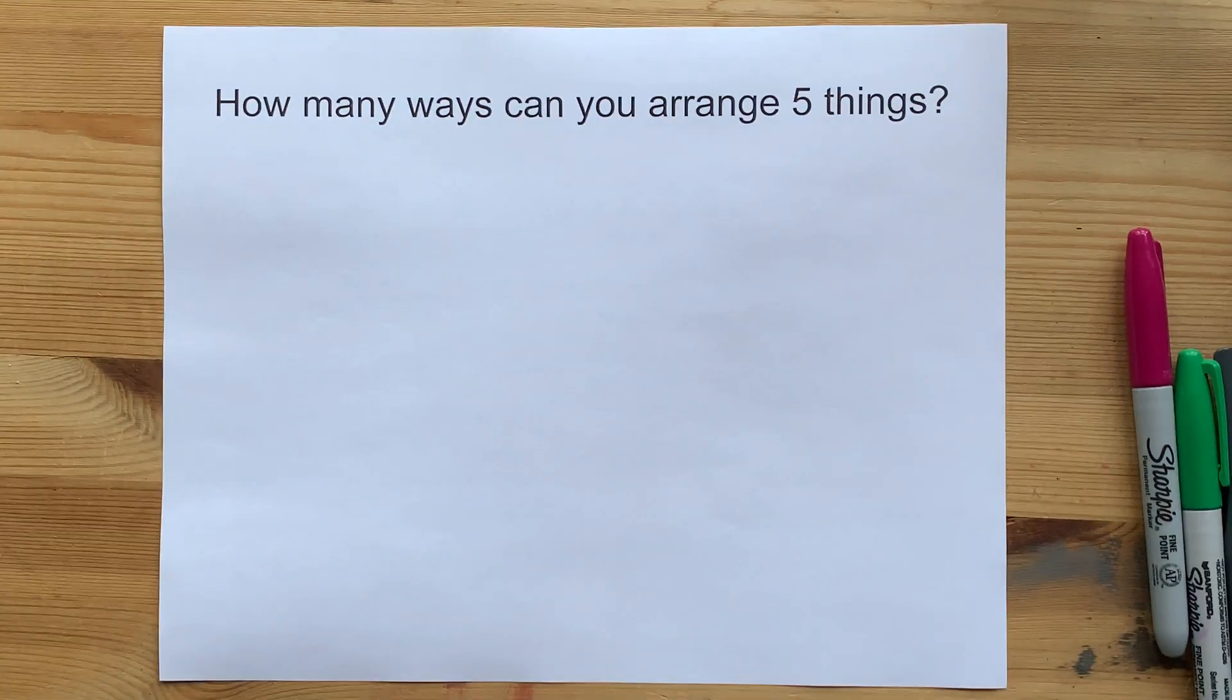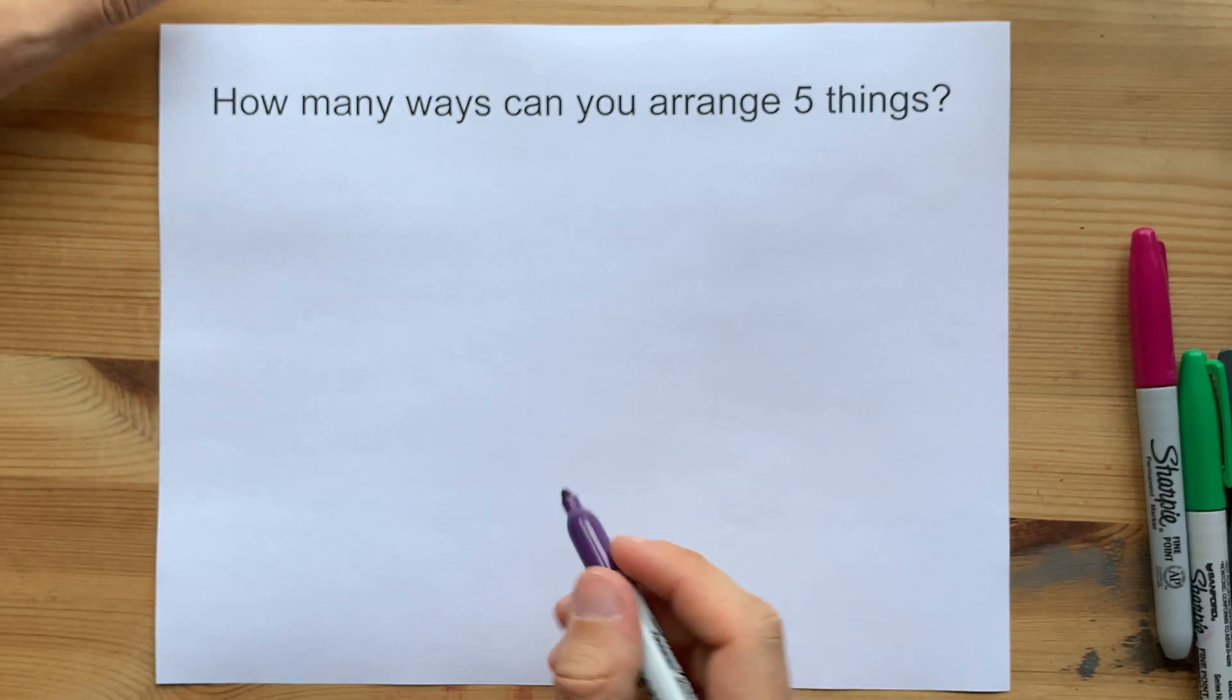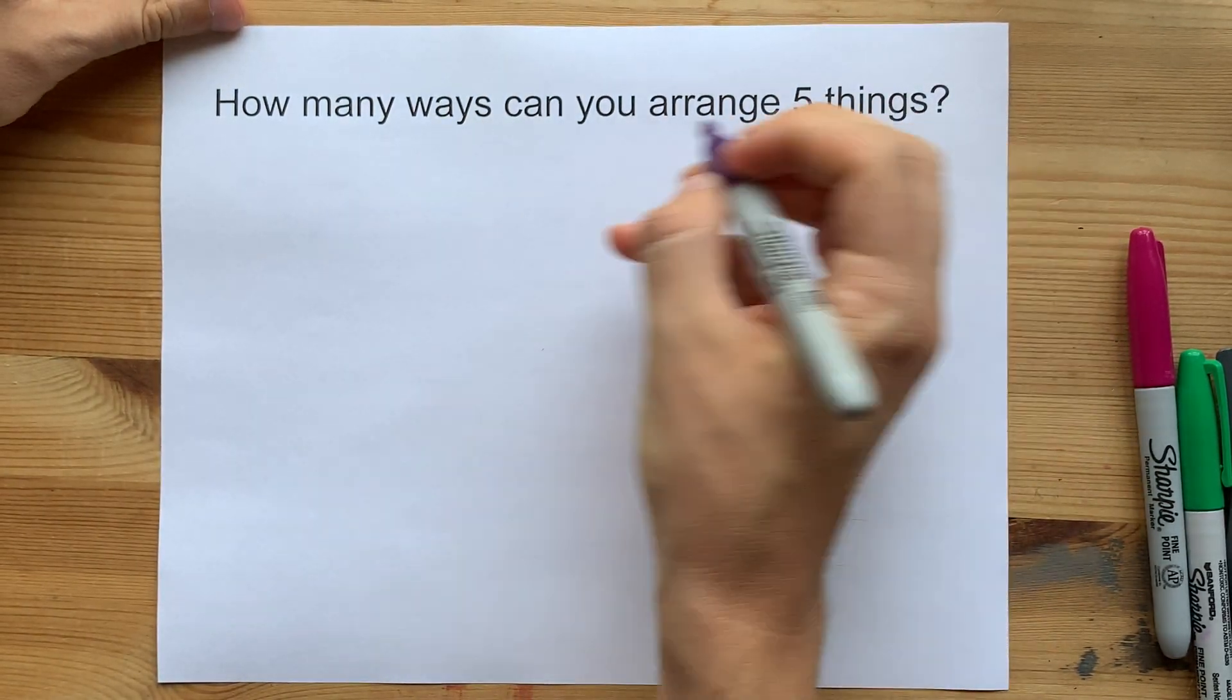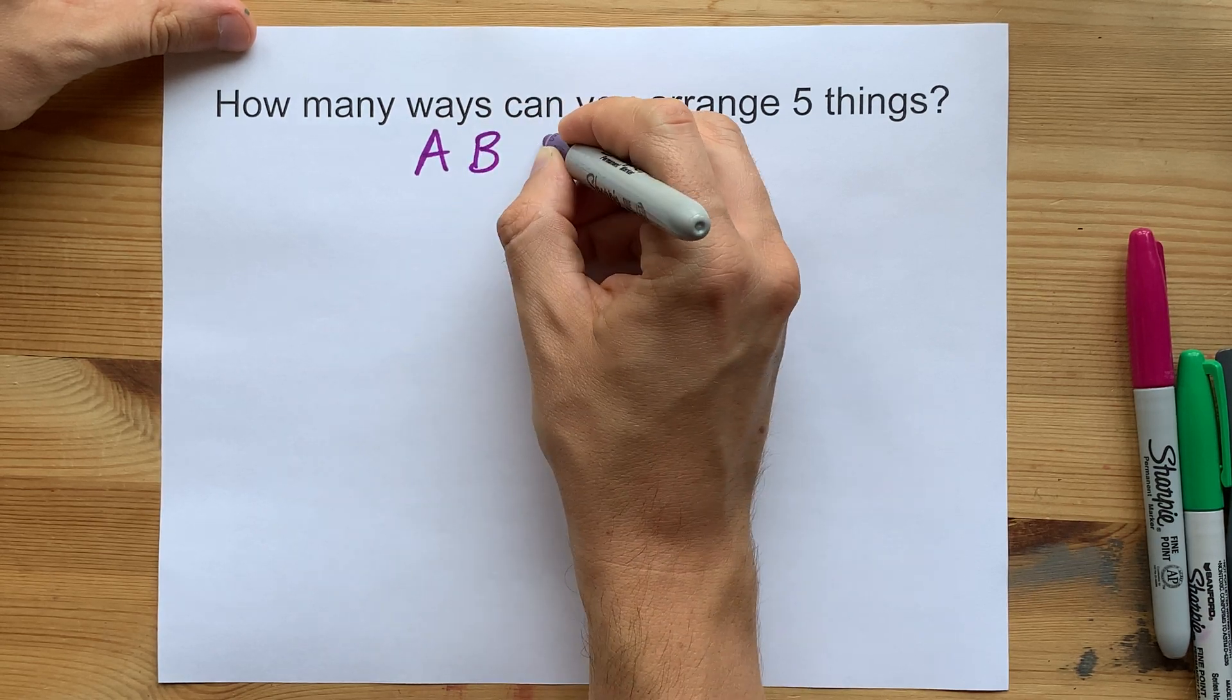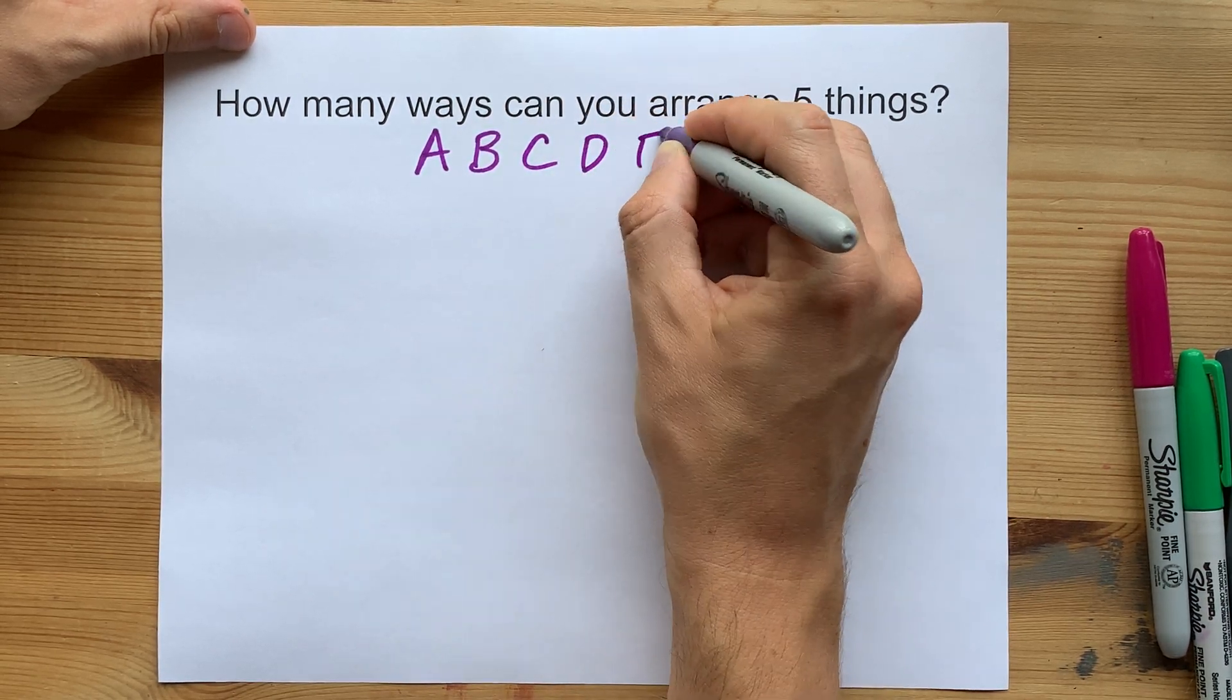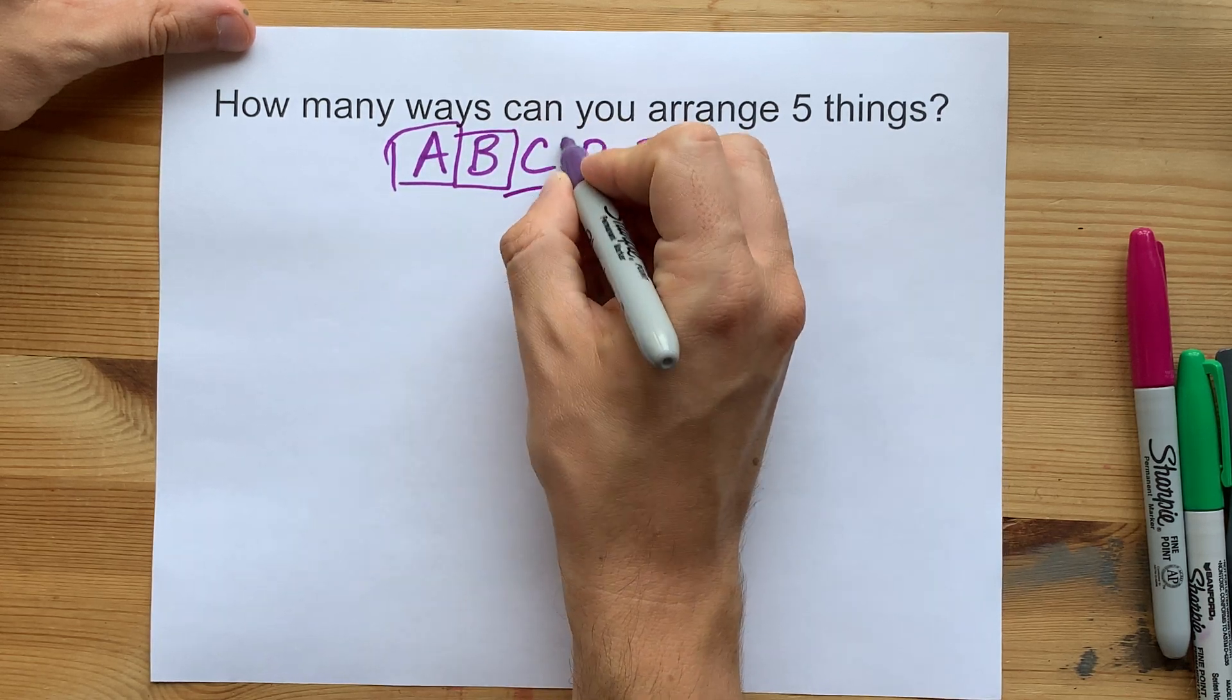How many ways can you arrange five things? There's two ways that I want you to be able to do this. Let's assume that the five things we're arranging are A, B, C, D, and E, just like Scrabble tiles or something.